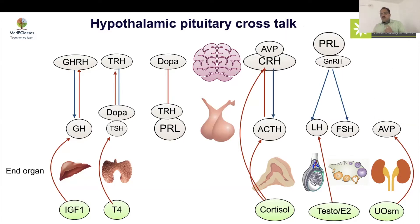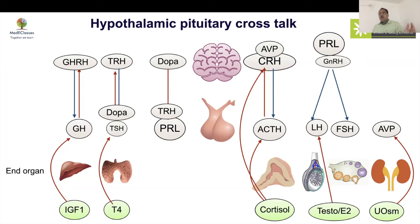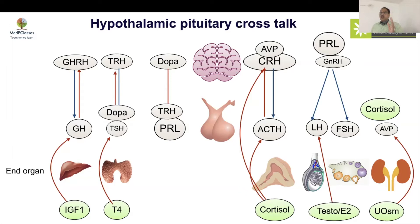A very important feedback mechanism is the AVP-cortisol axis. AVP regulates osmolality and cortisol regulates blood pressure, so they must interact at the hypothalamic level. AVP along with CRH regulates ACTH secretion. Cortisol inhibits AVP and promotes free water excretion, so cortisol deficiency causes AVP levels to rise, free water excretion to fall, and a picture resembling SIADH. Everyone with SIADH must have cortisol deficiency excluded.